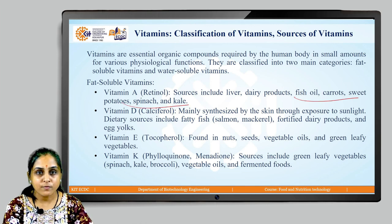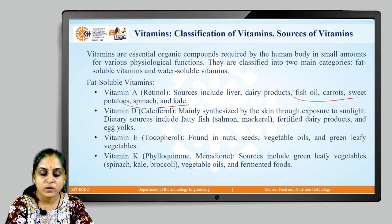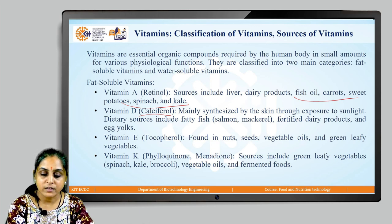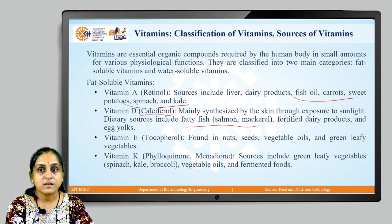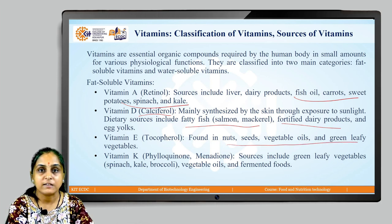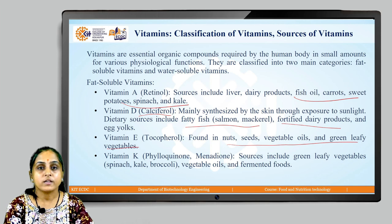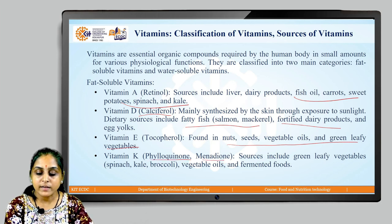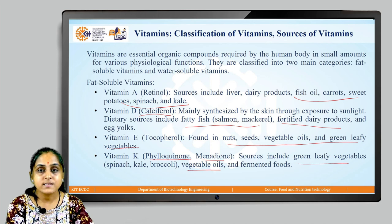Another fat-soluble vitamin is Vitamin D, also known as calciferol. It is mainly synthesized by the skin through exposure to sunlight, and can also be obtained from dietary sources including fatty fish like salmon, fortified dairy products, and egg yolks. Vitamin E, known as tocopherol, is found in nuts, seeds, vegetable oils, and green leafy vegetables. Vitamin K, another fat-soluble vitamin known as phylloquinone or menadione, has sources including green leafy vegetables, vegetable oils, and fermented foods.